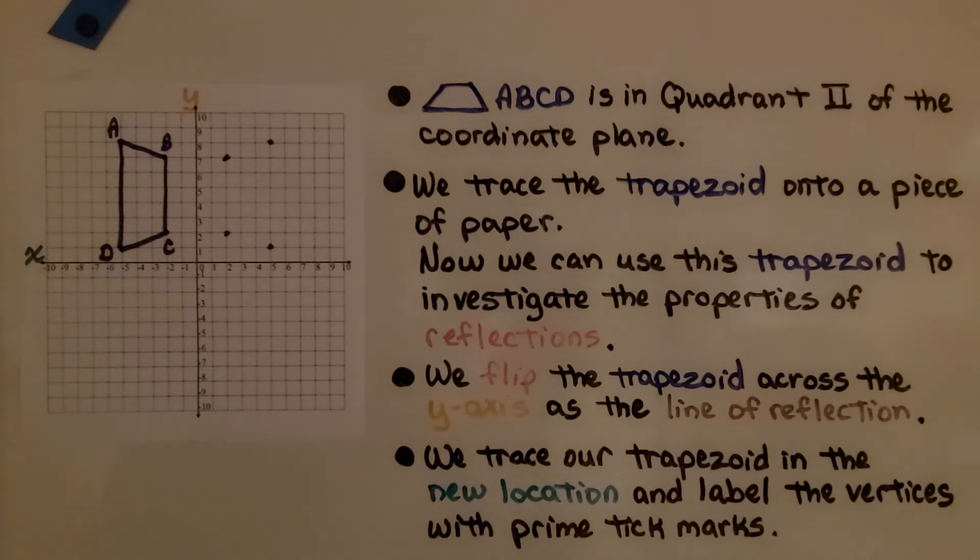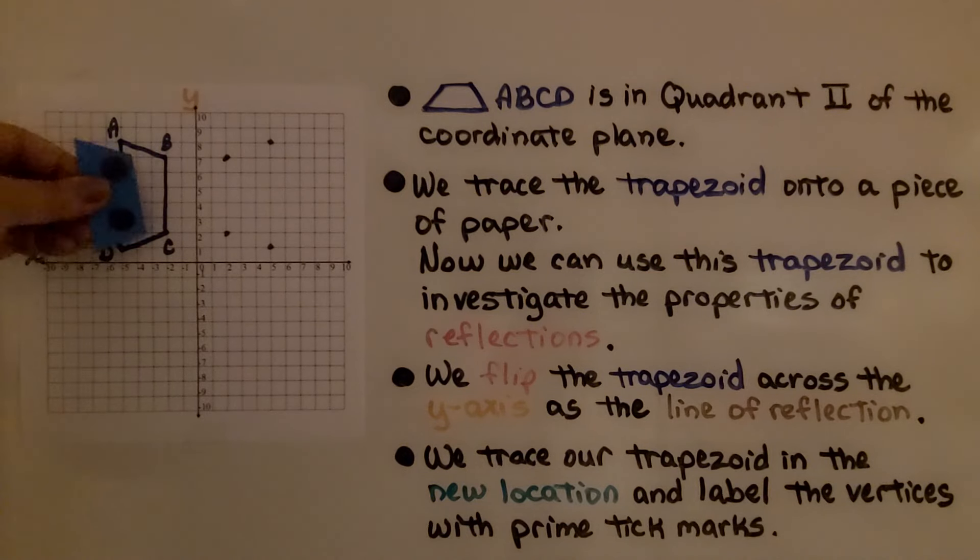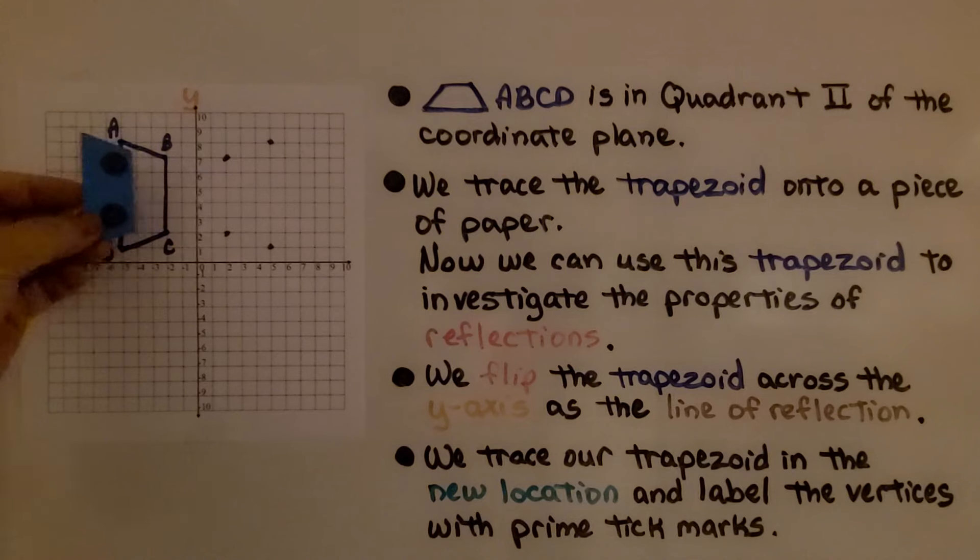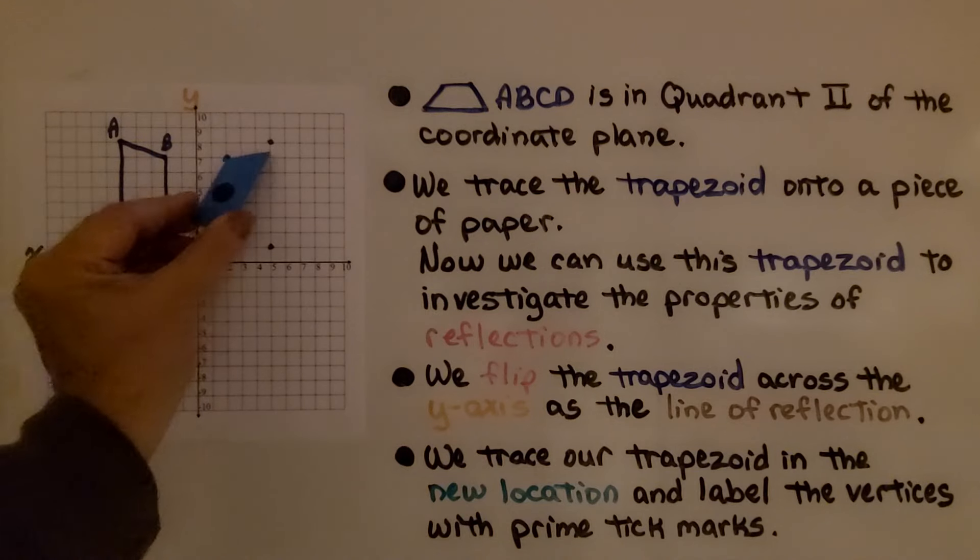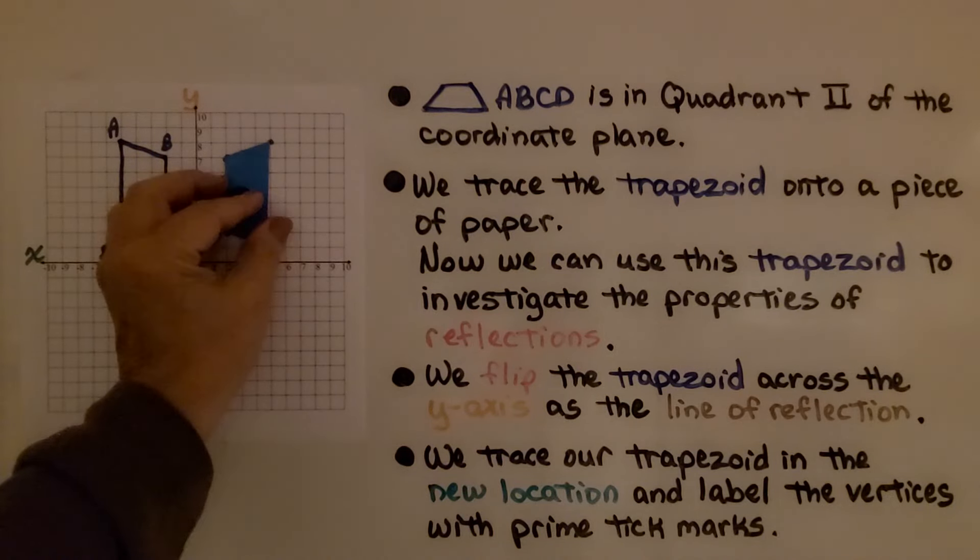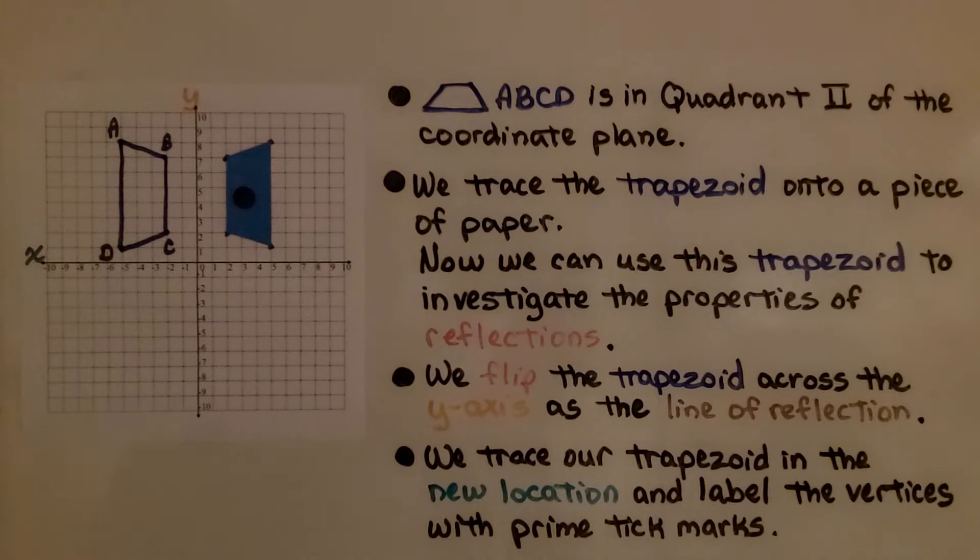We trace the trapezoid onto a piece of paper. We can cut it out and use this trapezoid to investigate the properties of reflections. We flip our cutout trapezoid across this y-axis as the line of reflection. Ignore my magnets, I need them to get this to stick to the board.